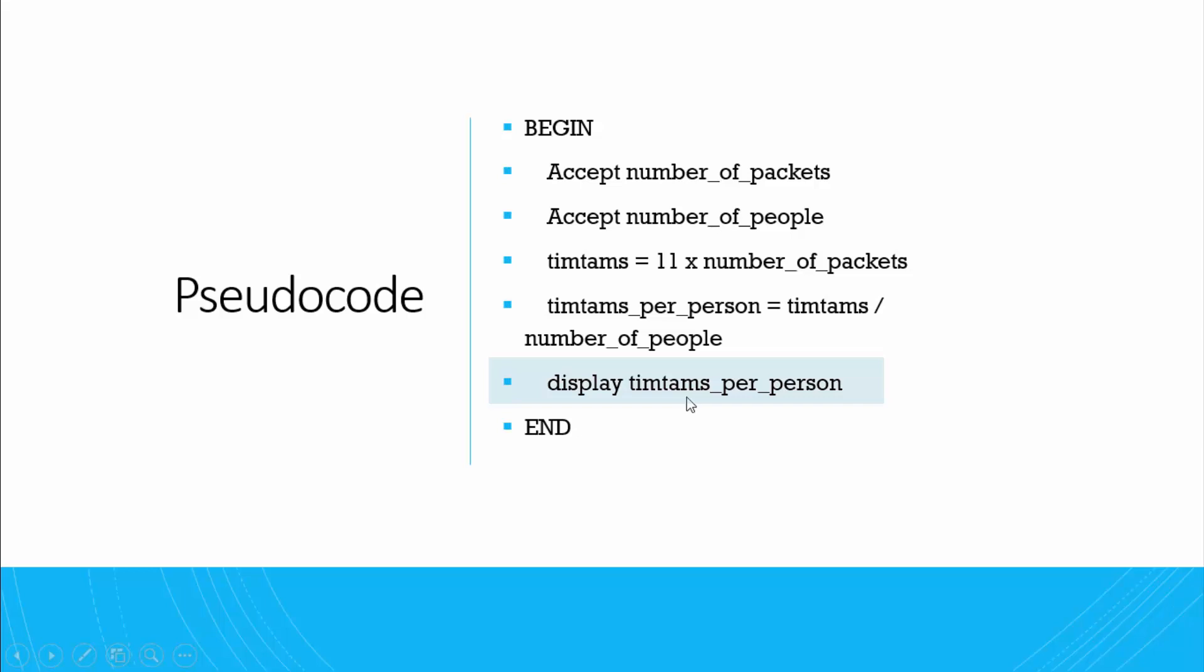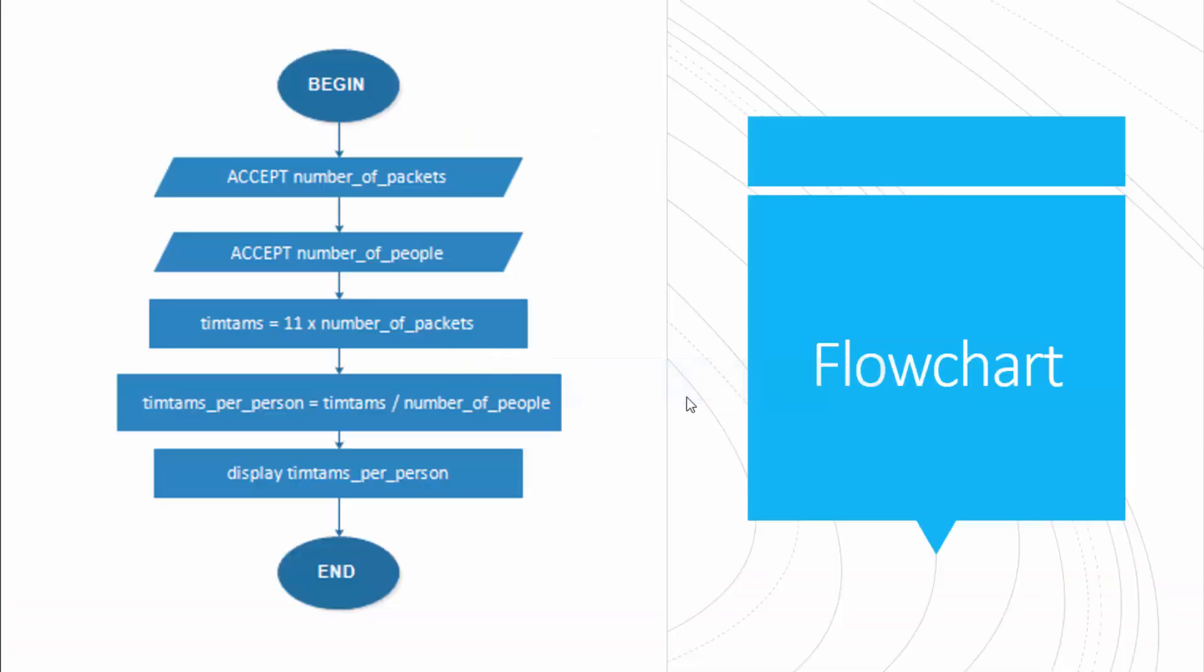So our flowchart, again very basic, very simple. We're using our ovals to begin and end, we have our parallelograms for our inputs, and then we have our rectangles for our processes. So it's exactly the same as the pseudocode. We accept the number of packets, we accept the number of people.